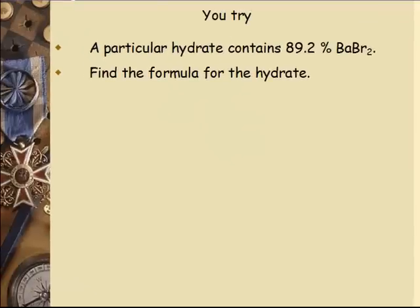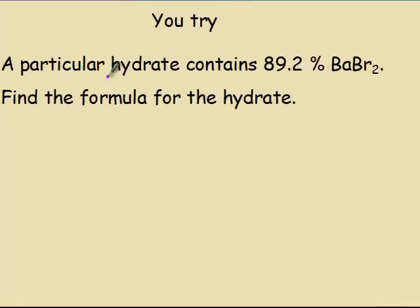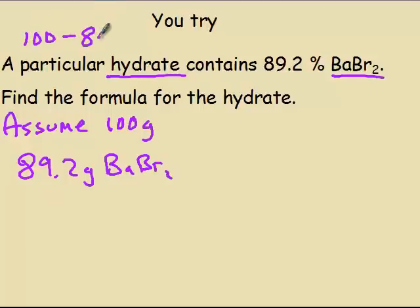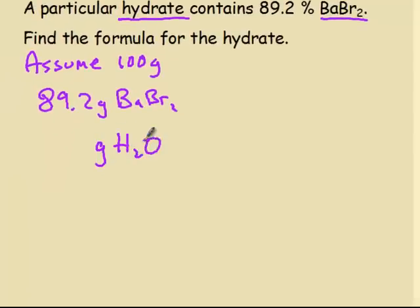A particular hydrate contains 89.2% barium bromide. Find the formula. You're only given one number this time, but they tell you it's a hydrate, and you have barium bromide. Since I have a percent, assume 100 grams. That's 89.2 grams of barium bromide. Since it's a hydrate, it has water in it. How much water would be 100 minus 89.2? Our grams of water is going to be 10.8.